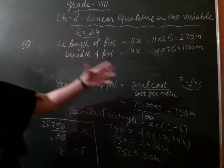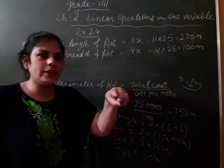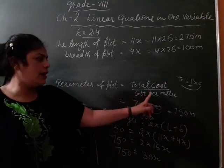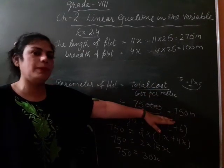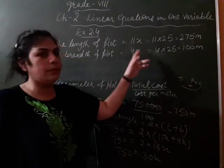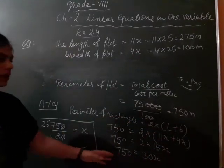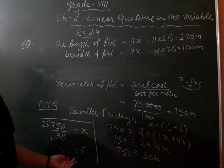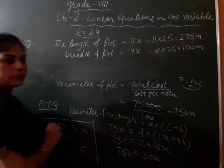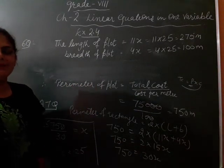You have total cost and per cost. And the cost given is fencing ki cost hai. Fencing means parameter. So, firstly you find perimeter, dividing total cost by cost per meter. Then apply perimeter formula using our given dimensions. From calculating this, our x equals 25. So, our answer is the length of plot is 11 into 25, that is 275 meter, and breadth is 4 into 25, that is 100 meter.